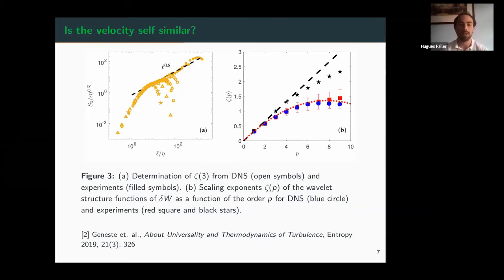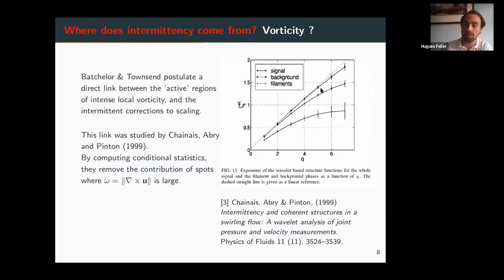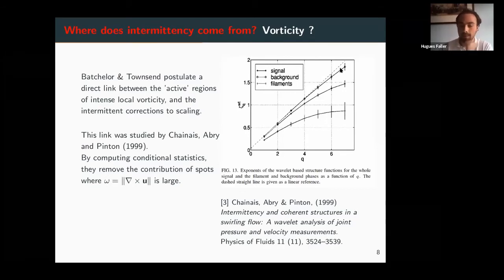The second question is where does this phenomenon come from? One of the two proposed hypotheses was the influence of vorticity. This was already studied by Chenet, Abry, and Pinton, who used conditional statistics to restrict structure functions to areas of either strong or small vorticity according to a threshold. The result: taking the whole signal gives the non-linear curve we observed. Taking only the strong vorticity part makes it even more intermittent, further from the line. Taking only the small vorticity part recovers the straight line — suggesting vorticity is a good explanation for this phenomenon.